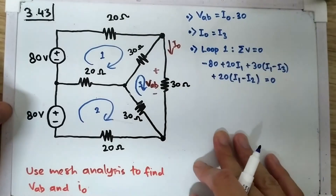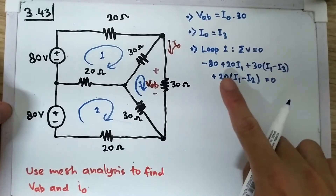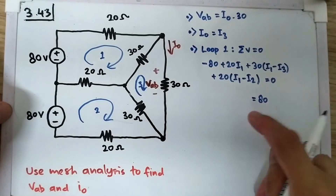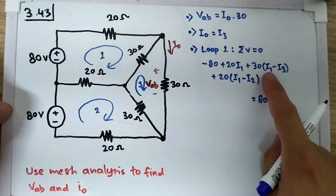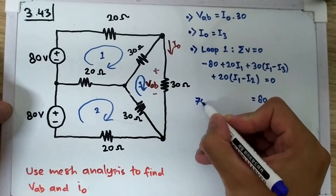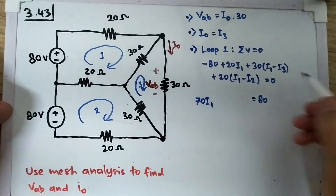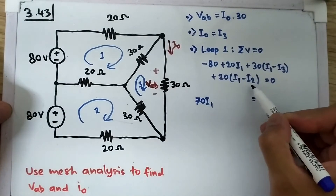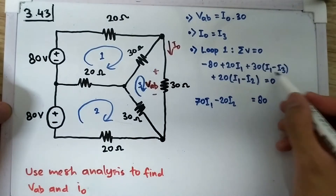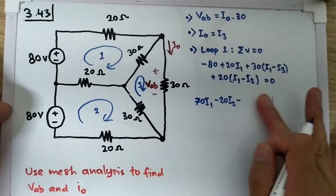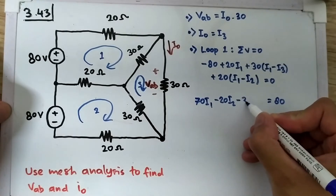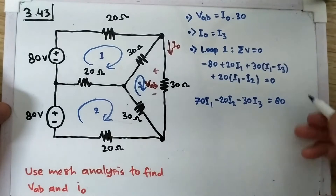Doing the algebra for loop 1: moving negative 80 to the right gives 80 on the right-hand side. For I1, we have 20 plus 30 plus 20, which is 70, giving 70·I1. For I2 we only have minus 20·I2, and for I3 we only have minus 30·I3. This is equation number one: 70·I1 − 20·I2 − 30·I3 = 80.